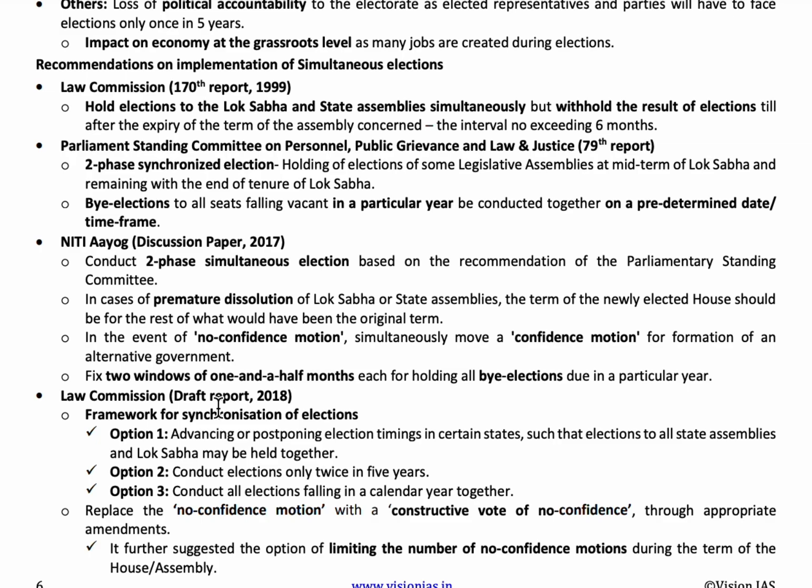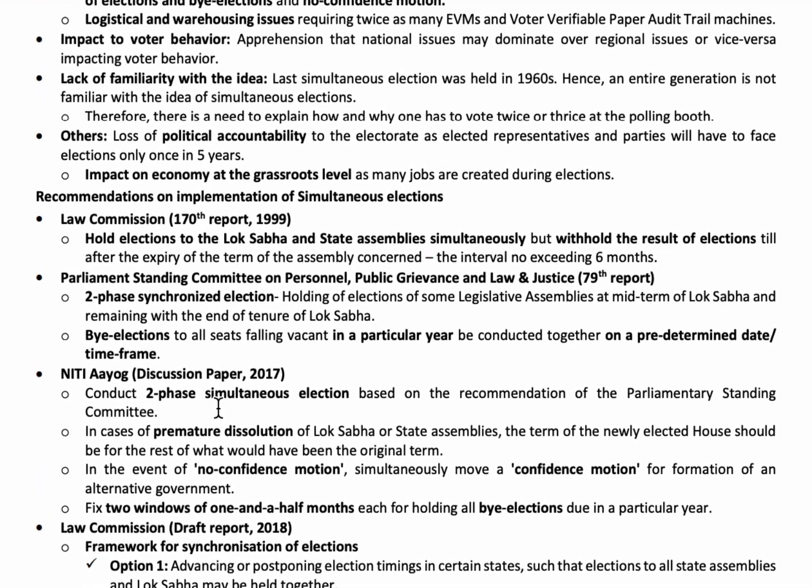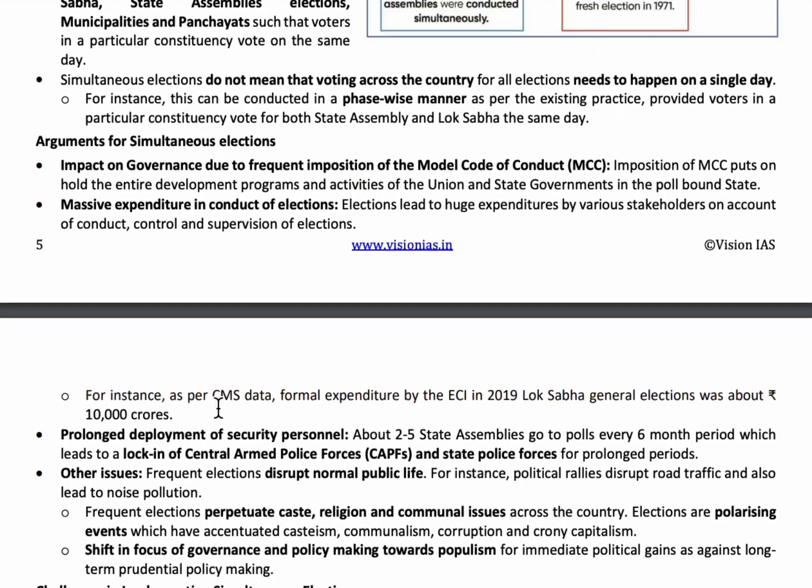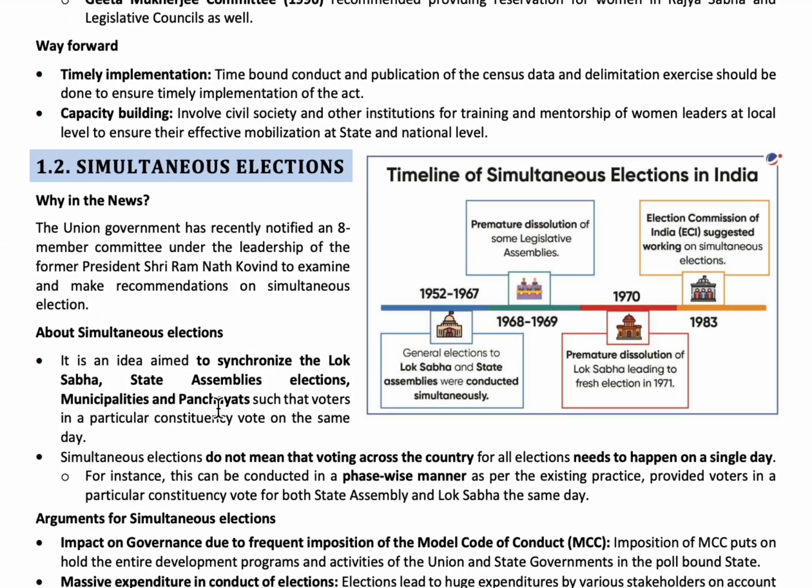When elections are conducted separately, the expenditure is also very high. As per the Centre for Media Studies (CMS) data, the formal expenditure by the ECI in the 2019 Lok Sabha general elections was about 10,000 crores. Implementing simultaneous elections reduces costs and increases efficiency in conducting elections.